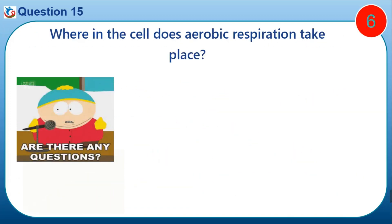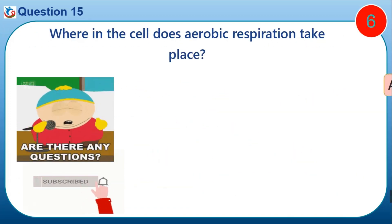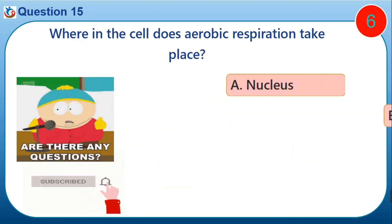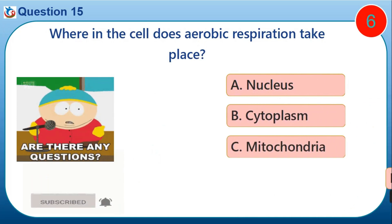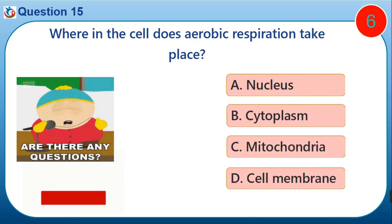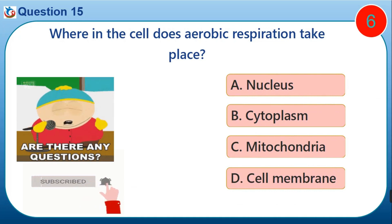Question fifteen: where in the cell does aerobic respiration take place? A) nucleus, B) cytoplasm, C) mitochondria, D) cell membrane.